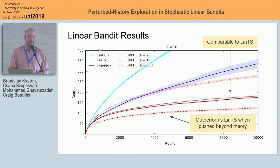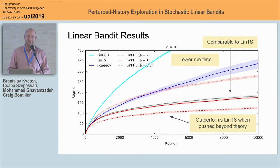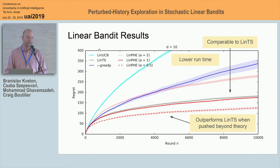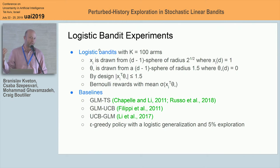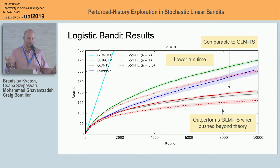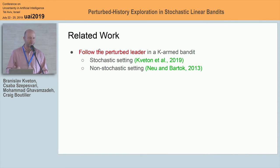We can further tune our method by reducing the number of pseudo-observations — using one pseudo-reward per two observations — and typically see little decline in performance. You can further outperform linear Thompson sampling this way. Another benefit is lower runtime: in linear Thompson sampling you sample from a D-dimensional Gaussian, whereas here we sample from K multinomials and compute the maximum likelihood estimate. Results on logistic bandits with 100 random problems and 100 arms show the same trend: one pseudo-reward per observation gives comparable performance to Thompson sampling, you can further outperform it, and you achieve one-half to one-third of the runtime of Thompson sampling algorithms.